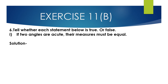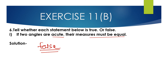Question number 6, first bit: Tell whether each statement is true or false. Statement: 'If two angles are acute, their measurements must be equal.' This is false — two acute angles can have different measurements.